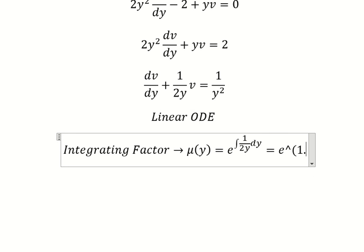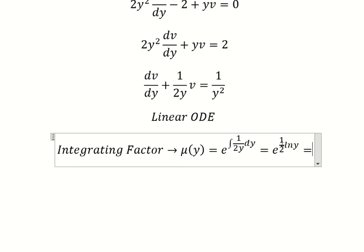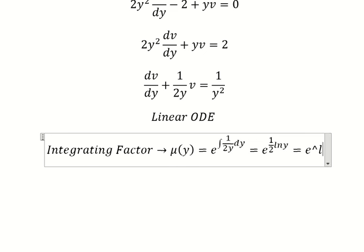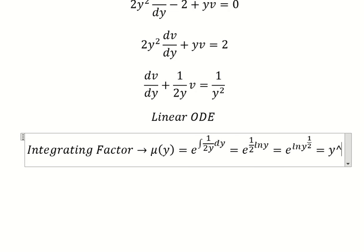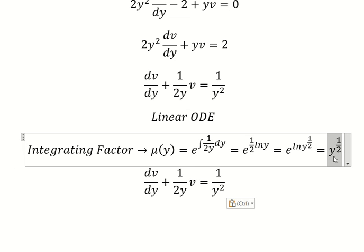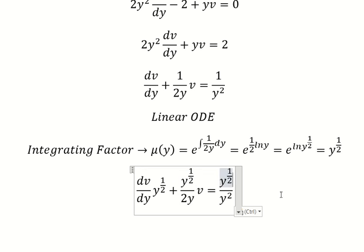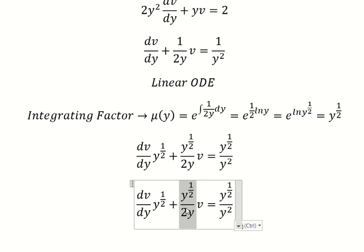We have one over two f of y, so we put one over two inside of our natural log here. Now we multiply both sides by this integrating factor, and now we can simplify.